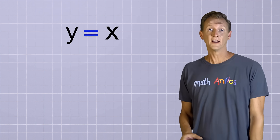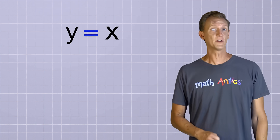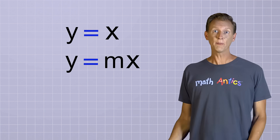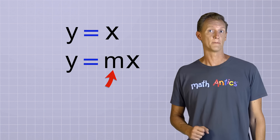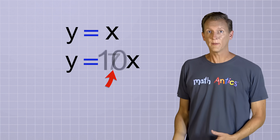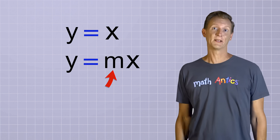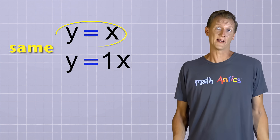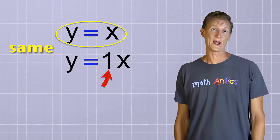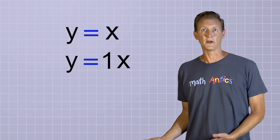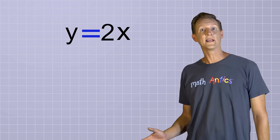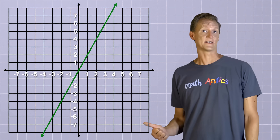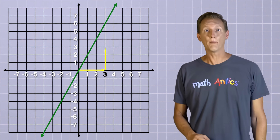Now let's look at a slightly more complicated and much more versatile linear function: y equals mx. This looks similar to y equals x, but now the input variable x is being multiplied by a new variable called m. By choosing different values for m, we can make as many different linear functions as we want. If we choose m equals 1, that gives us y equals 1x, which is the same as y equals x. But if we pick m equals 2, that gives us y equals 2x. If we make a function table and graph it, we get a line where for every input value of x, the output y is doubled.